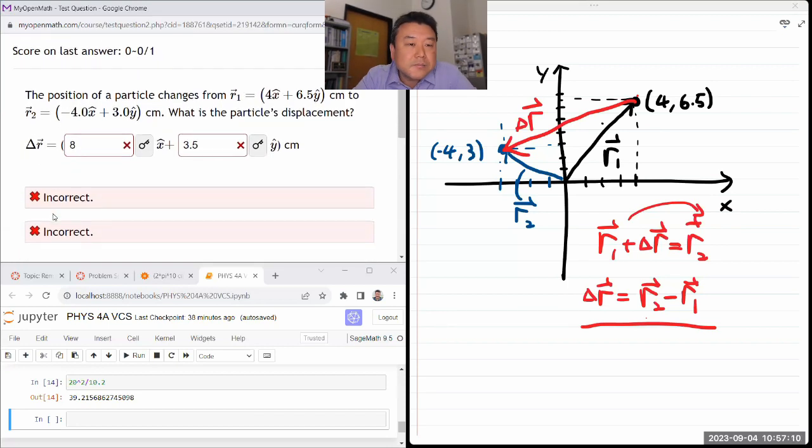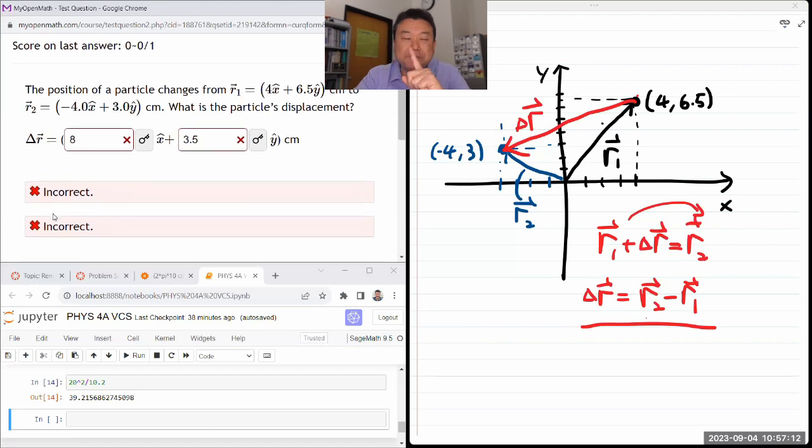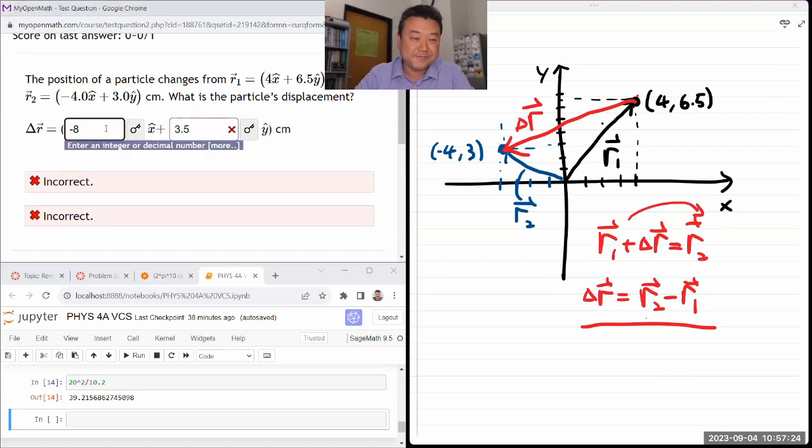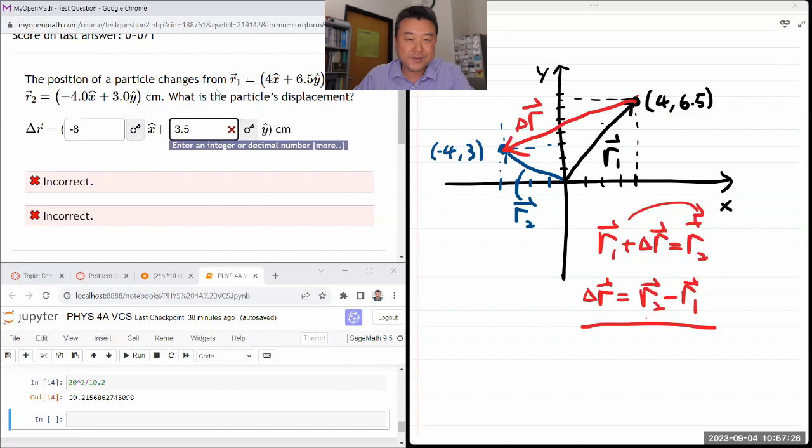Well, I wrote down correct expression and did the wrong thing. That's why I've got to slow down. R2 minus R1. So R2 minus R1, minus four minus four, so minus eight. And then three minus 6.5, so minus 3.5.